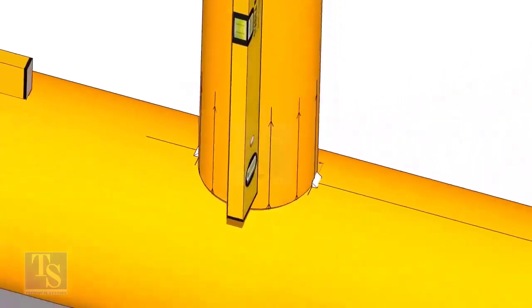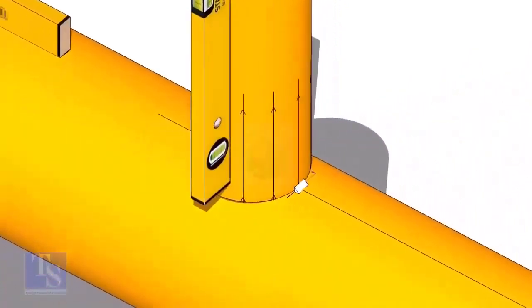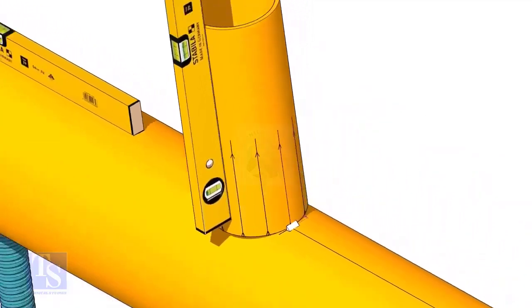Now, make sure the pipe header and the branch are horizontally and vertically level. If required, strengthen the tack weld.